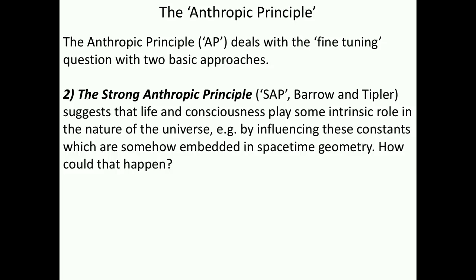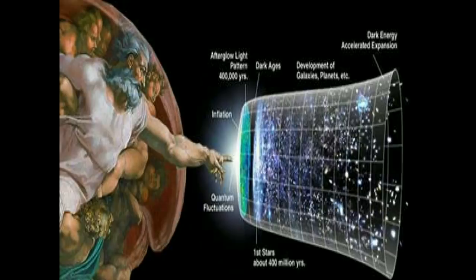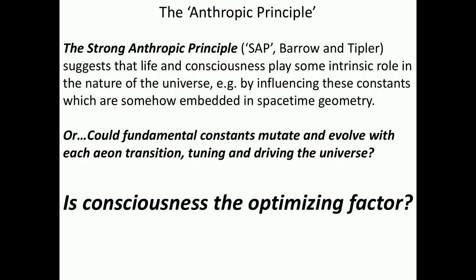The other possibility is the strong anthropic principle suggests that life and consciousness play some intrinsic role in the nature of the universe by influencing these constants which are somehow embedded in space-time geometry. How could that happen? One view is God. People say God started the universe, perhaps. The other possibility is that these fundamental constants mutate and evolve with each eon transition from eon to eon, with each big bang to the next, tuning and driving the universe.